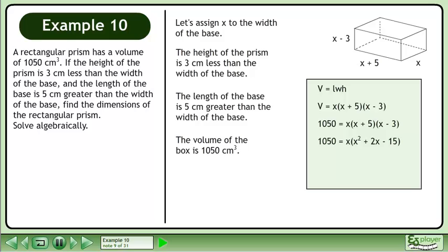Multiply the binomials. Multiply x through the brackets. Subtract 1050 from both sides of the equation to get 0 equals x³ plus 2x² minus 15x minus 1050.